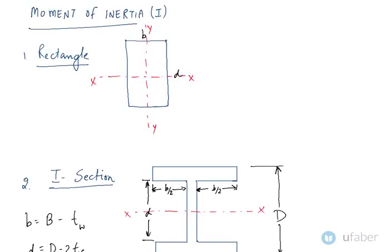Before we go on to study about the various moments of inertia, let us look at a term which we call section modulus. The section modulus is represented by the letter capital Z.